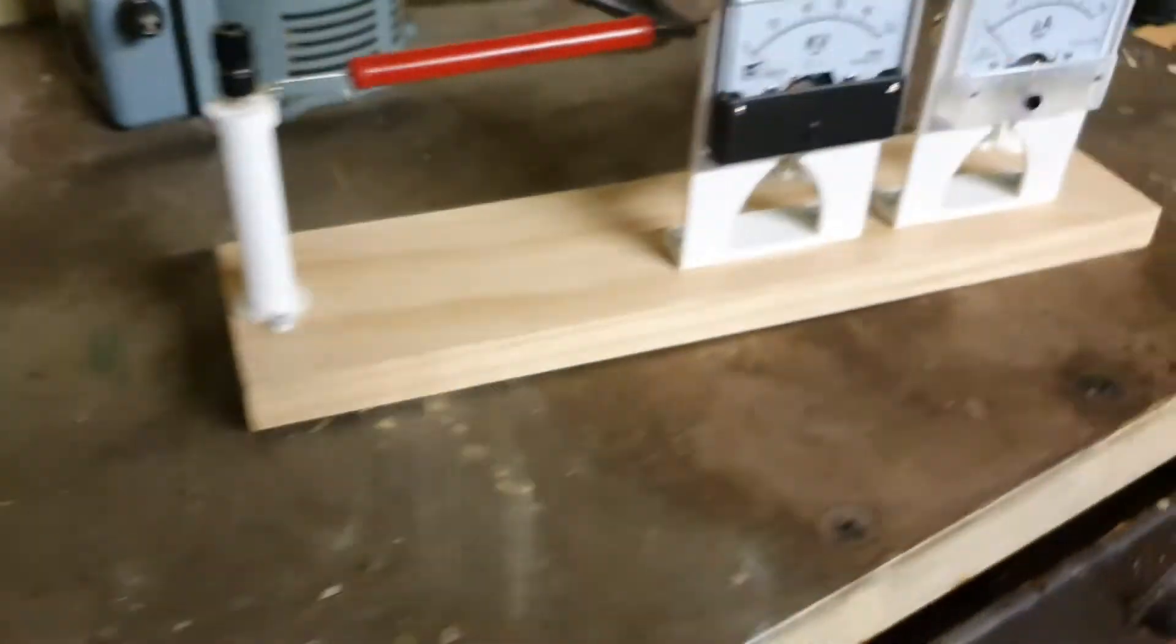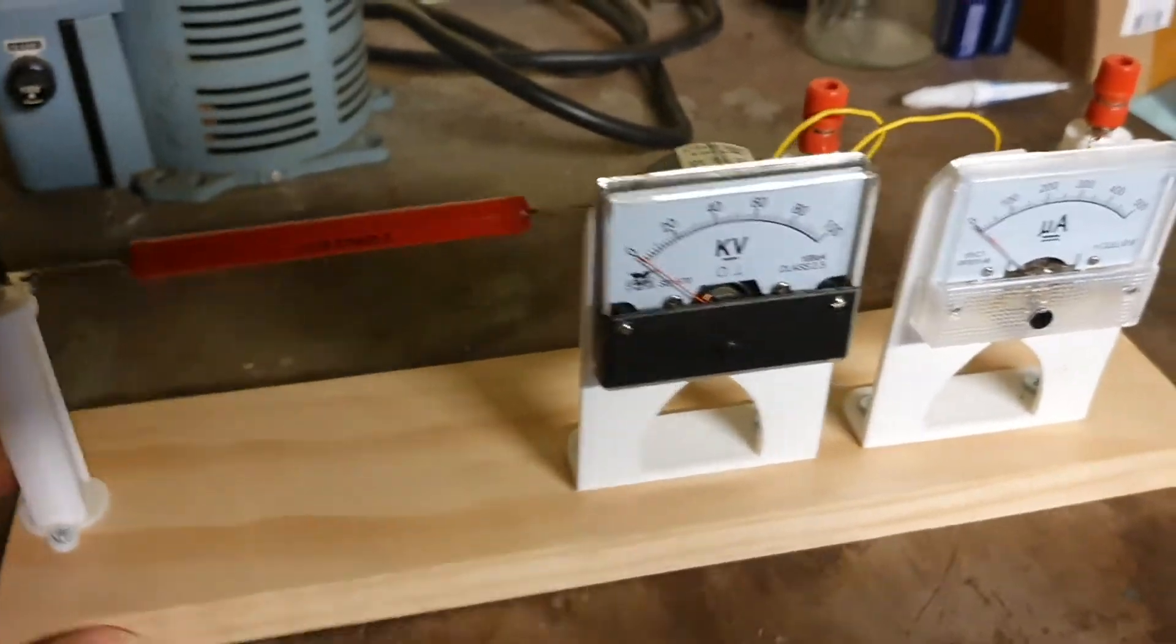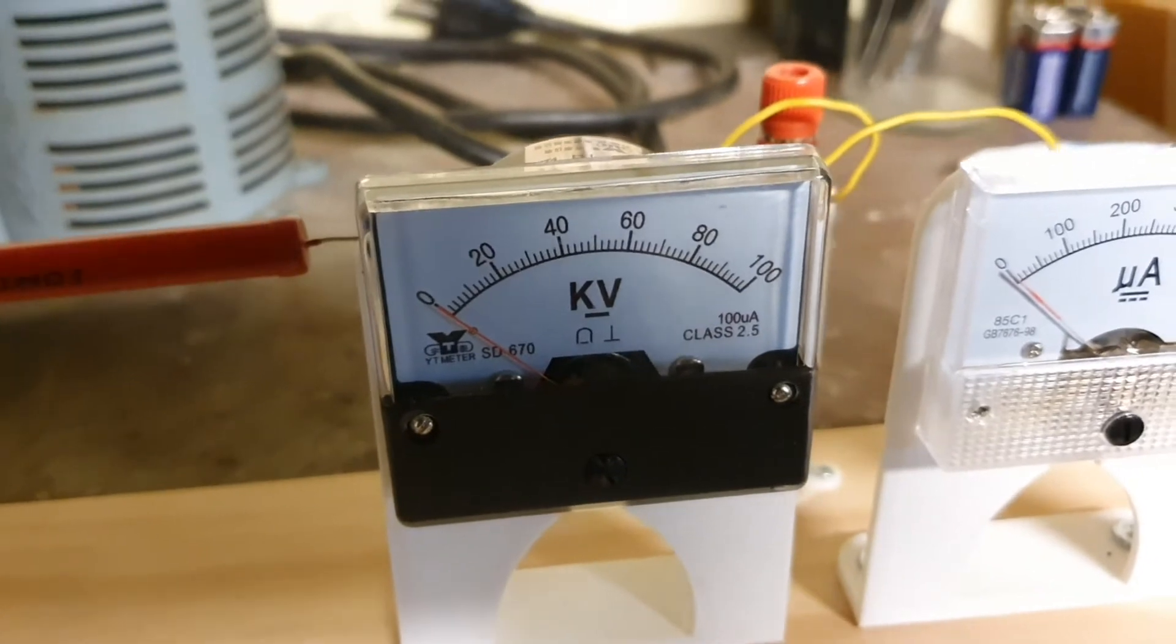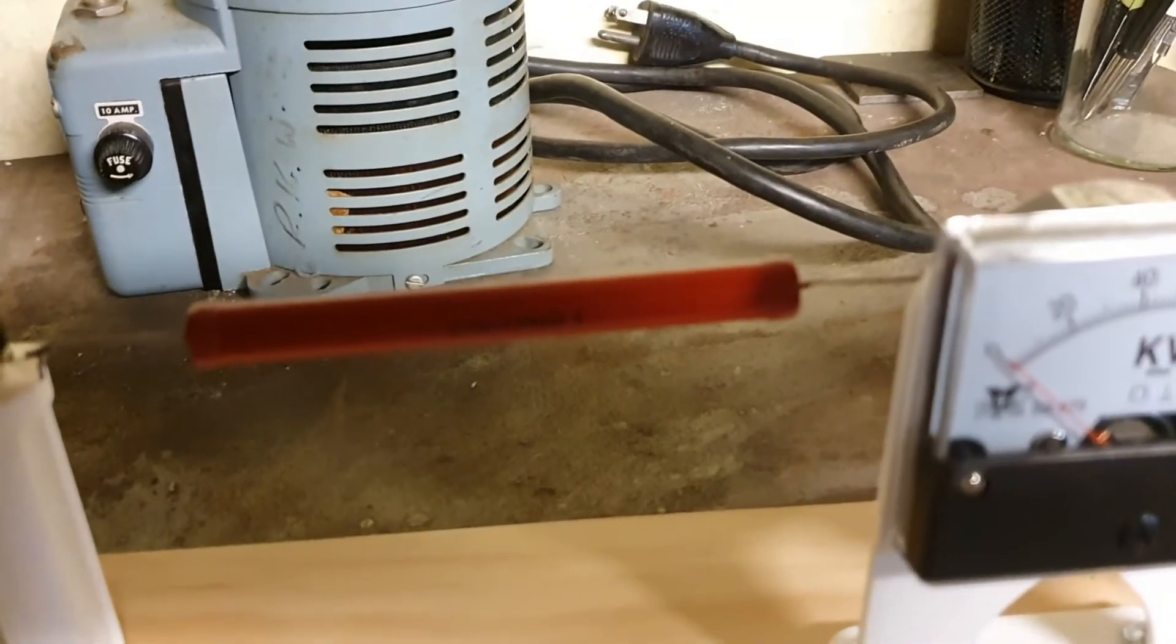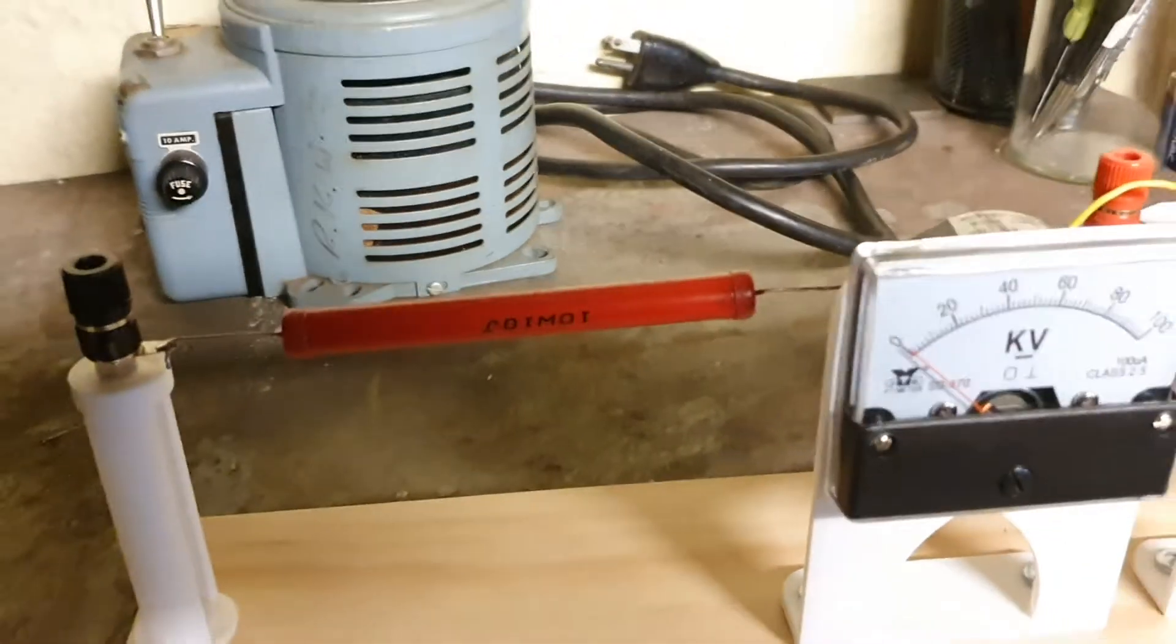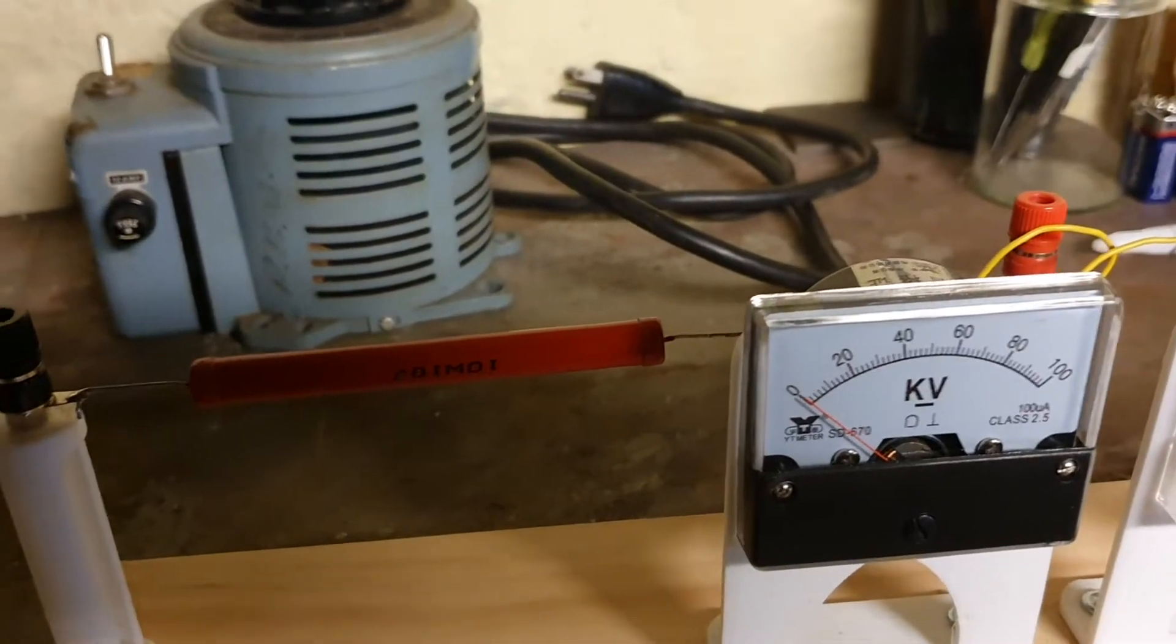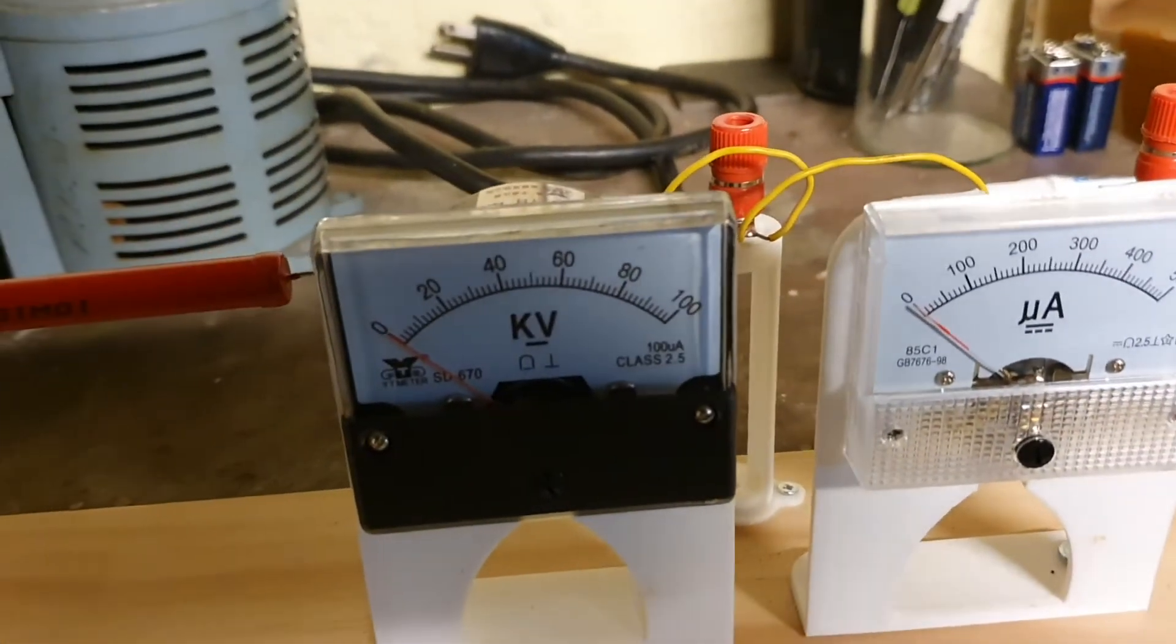And this is a nice little tool I built for measuring high voltage. So this is a 100,000 volt meter and it comes with a matched resistor. So if you use the voltmeter with the resistor, you can accurately measure up to 100,000 volts.